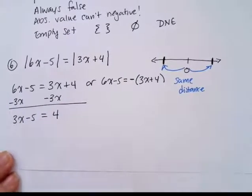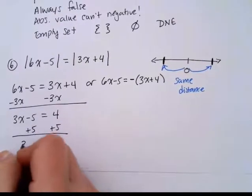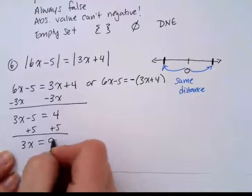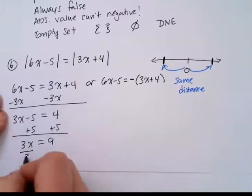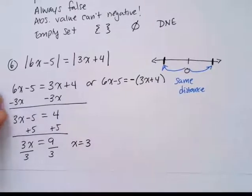Which means that I now have to add 5 to both sides. 3x equals 9. And then divide by 3. And I have x equals 3. So one possible value for x would be 3.